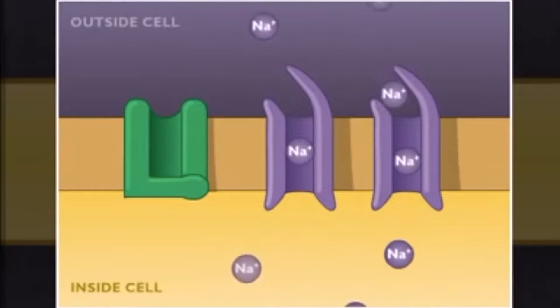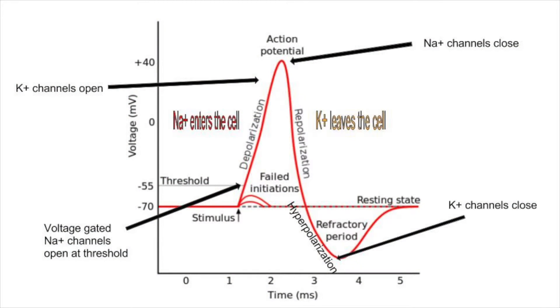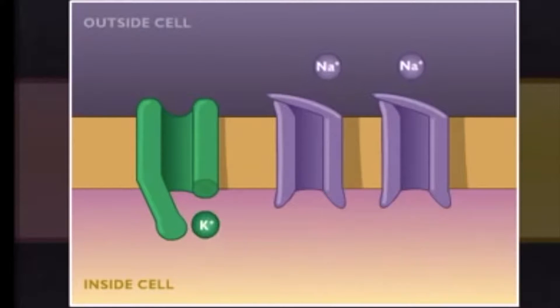The potassium channels open slowly while the sodium channels close. Potassium leaves the cell and the membrane potential begins to become negative again. The potassium gates close more slowly than the sodium gates, leaving the cell hyperpolarized because more potassium leaves the cell than sodium entered.